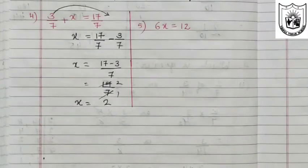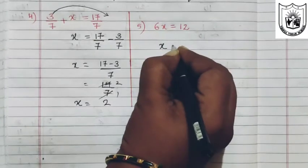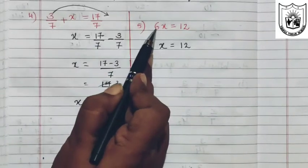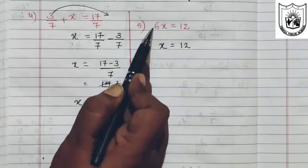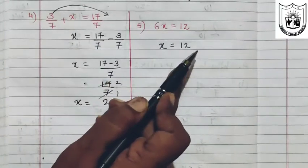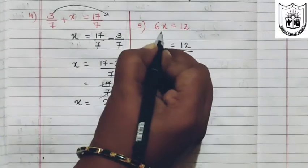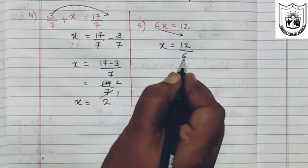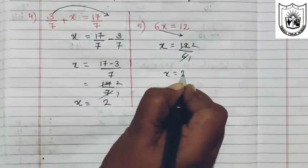Let us now solve the fifth problem. We need to find the value for x. Between 6 and x we have multiplication, giving 6x. So when 6 is transposed to the other side, it will get divided. So x equals 12 divided by 6, which is 2.